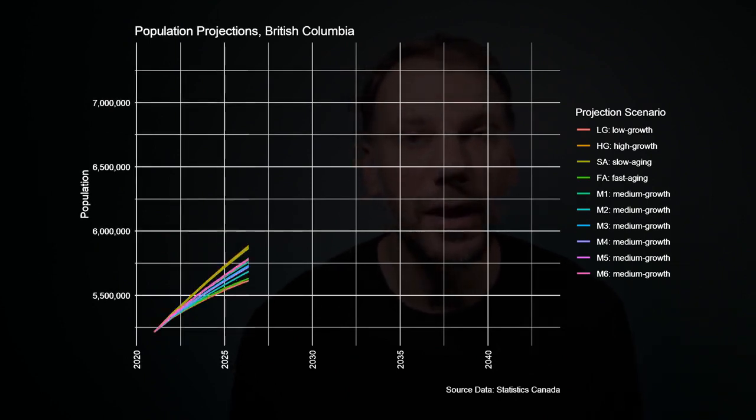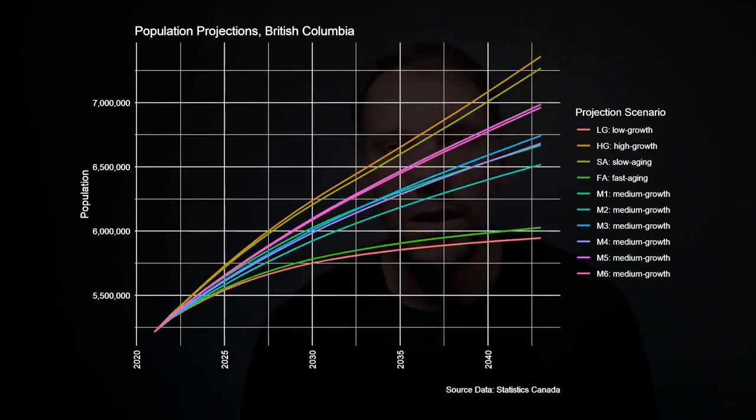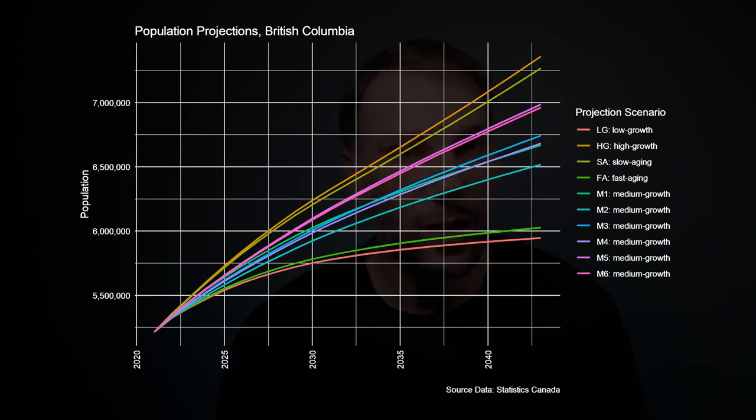StatCan just released their latest population projections for all provinces in Canada, featuring 10 growth scenarios for each province, ranging from low growth to high growth. Here's a plot of what these scenarios look like for BC over the next 20 years. One of the interesting things about this plot is that all of the scenarios are pointing upwards.